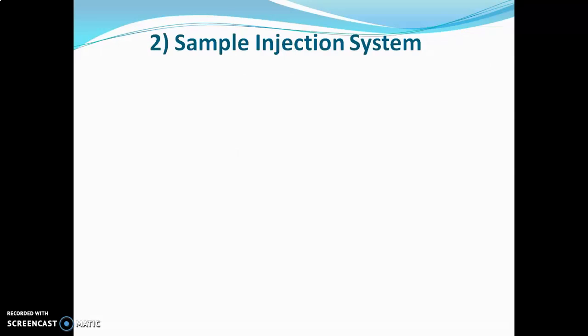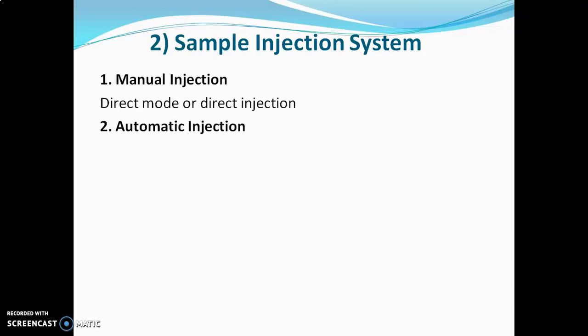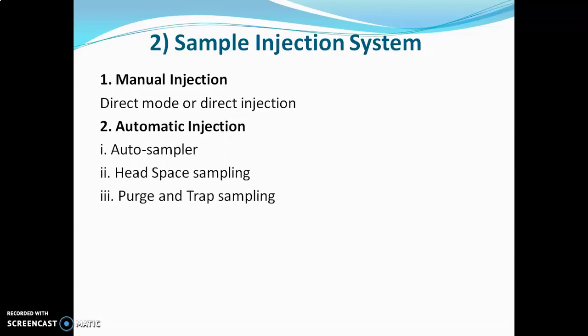Now we will go for sample injection systems used in GC. There are two main types: first is manual injection and second is automatic injection. In manual injection, direct mode or direct injection is used. In automatic injection, methods include auto sampler, headspace sampling, purge and trap sampling, and pyrolysis sampling.